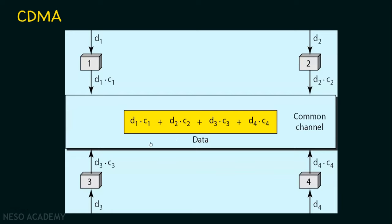In this example, there are four stations: Station 1, Station 2, Station 3, and Station 4. Station 1 is generating D1 data, Station 2 is generating D2 data, Station 3 is generating D3, and Station 4 is generating D4. Each station has an assigned code: C1 is the code for Station 1, so Station 1 generates D1·C1. Station 2 uses code C2 applied on D2; Station 3 uses C3 on D3; and Station 4 uses C4 on D4. In the common channel, all data — D1C1 + D2C2 + D3C3 + D4C4 — are combined and sent as a single signal over the channel. This is multiplexing, where multiple signals are converted into a single signal.